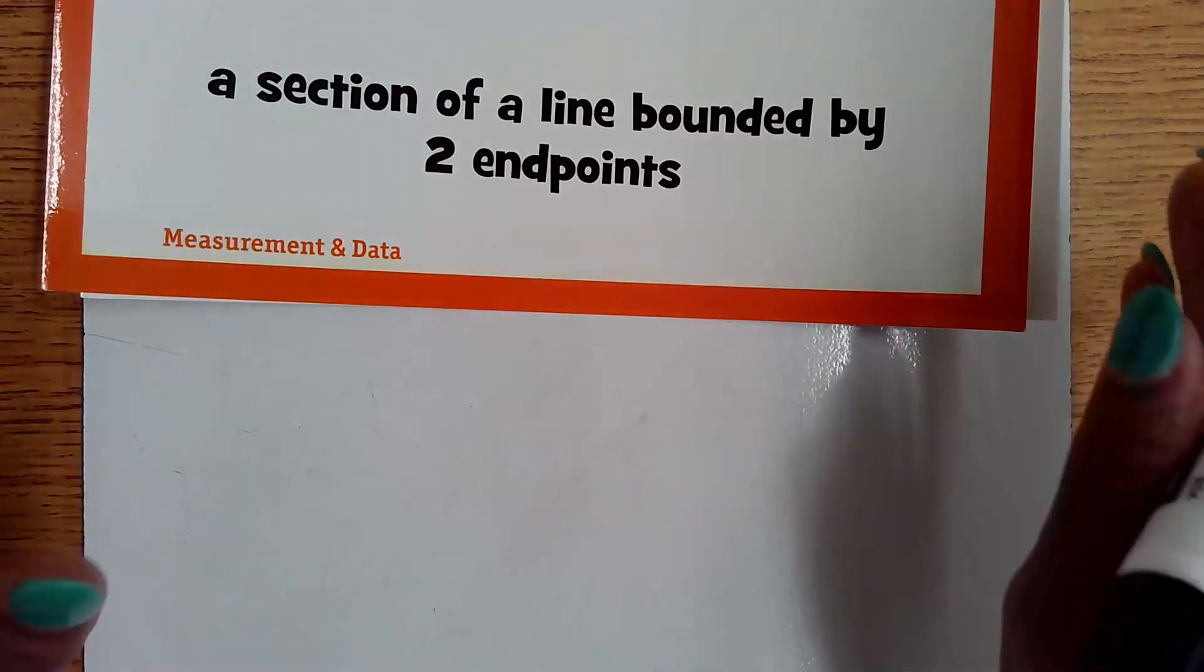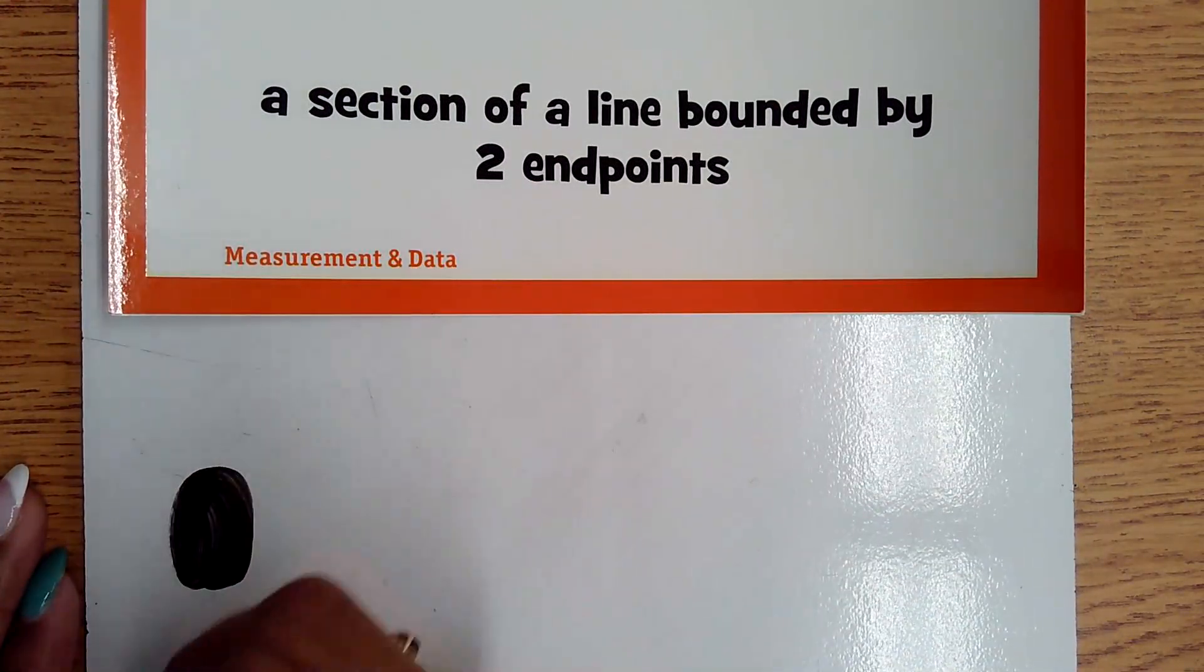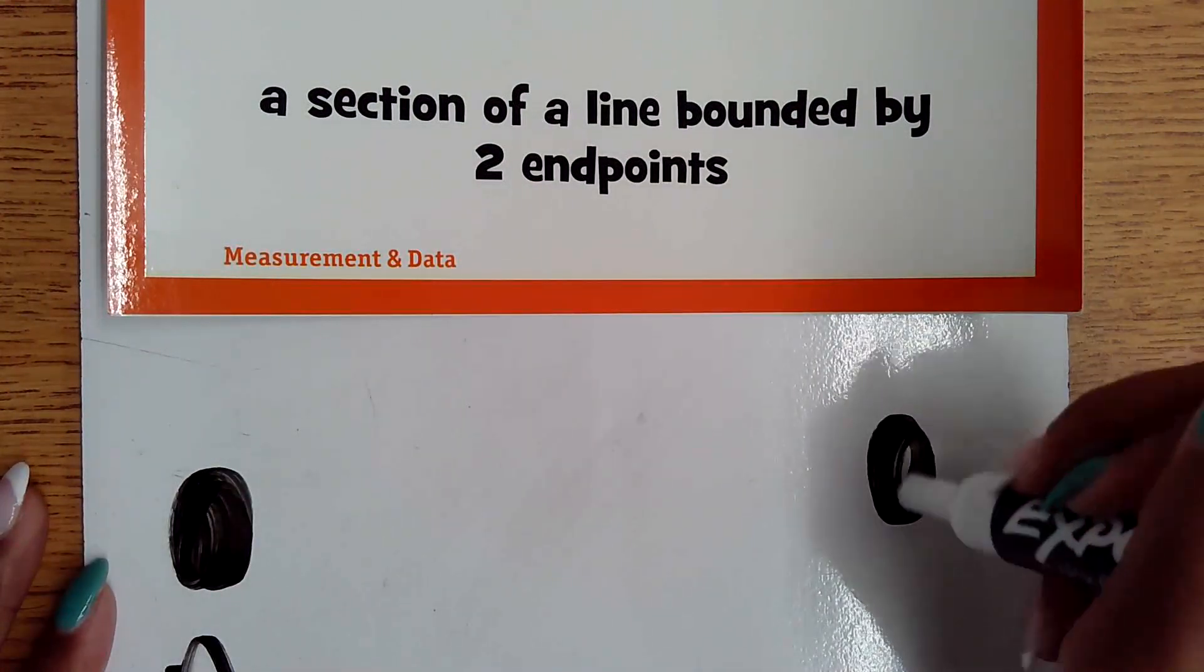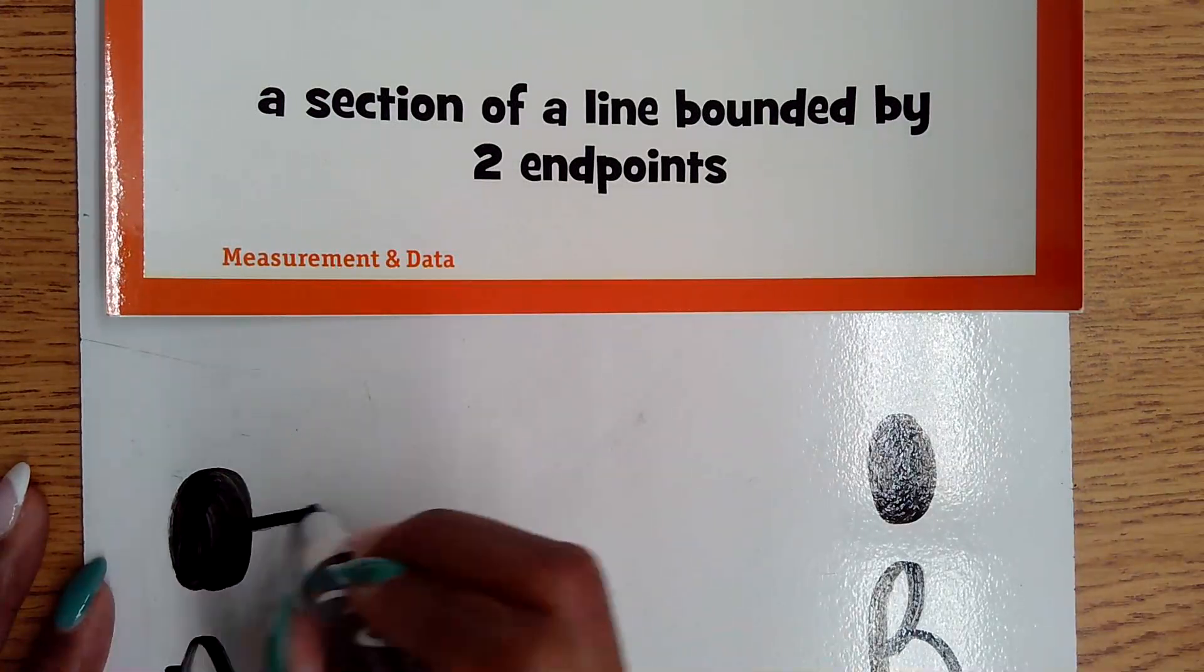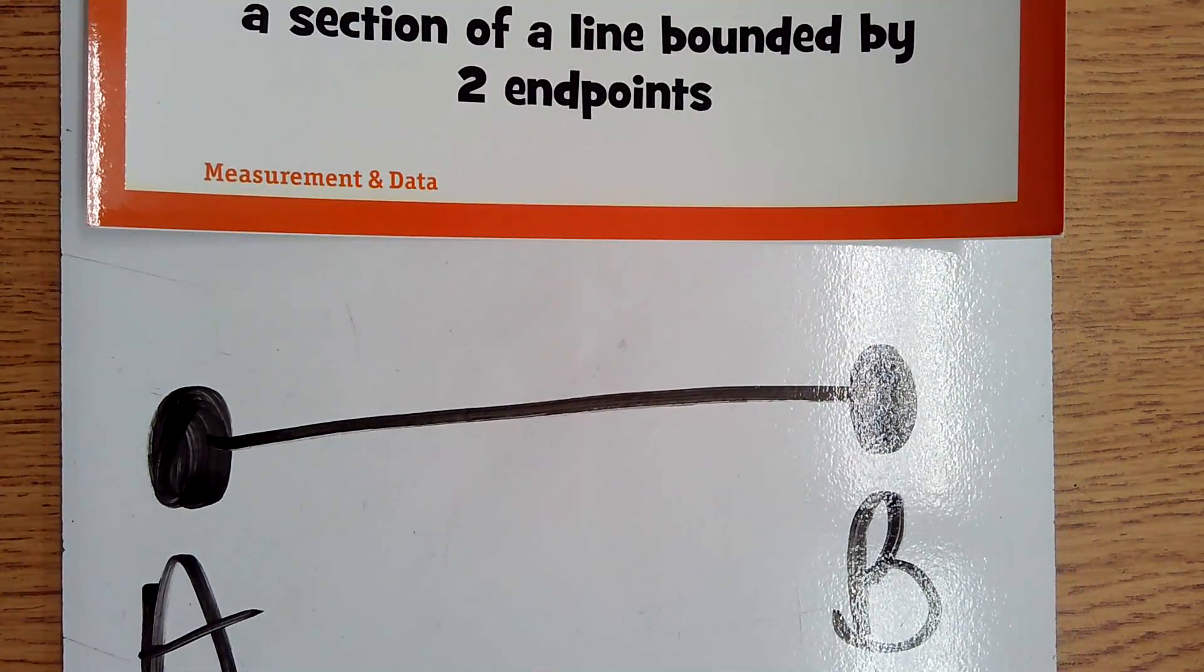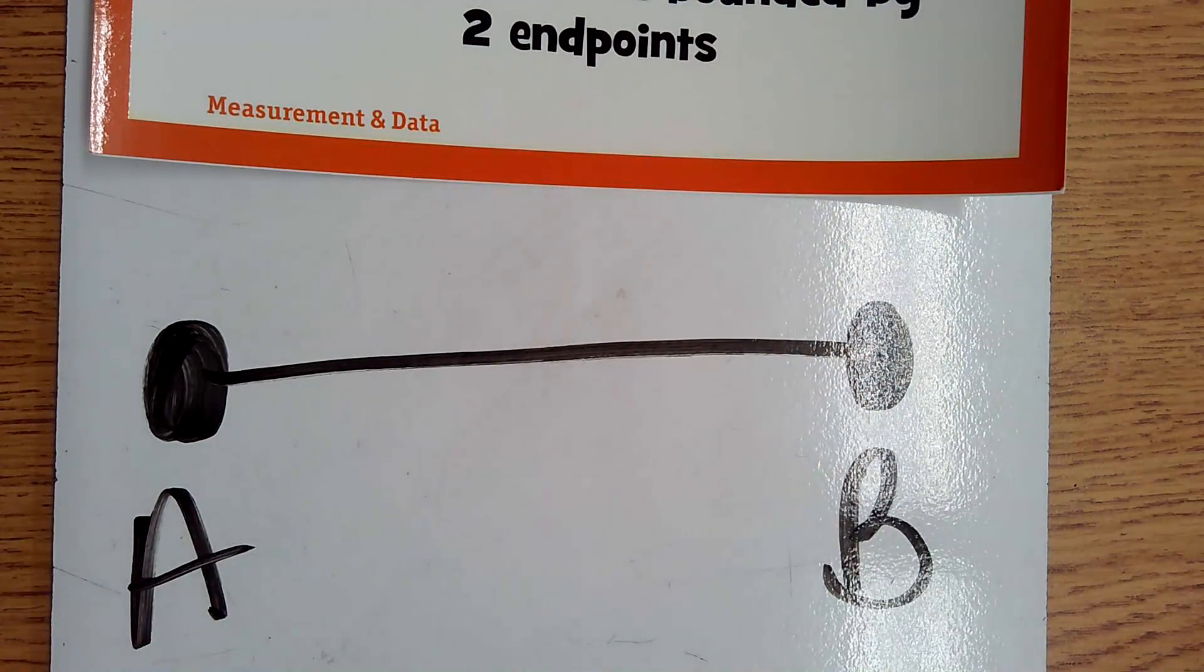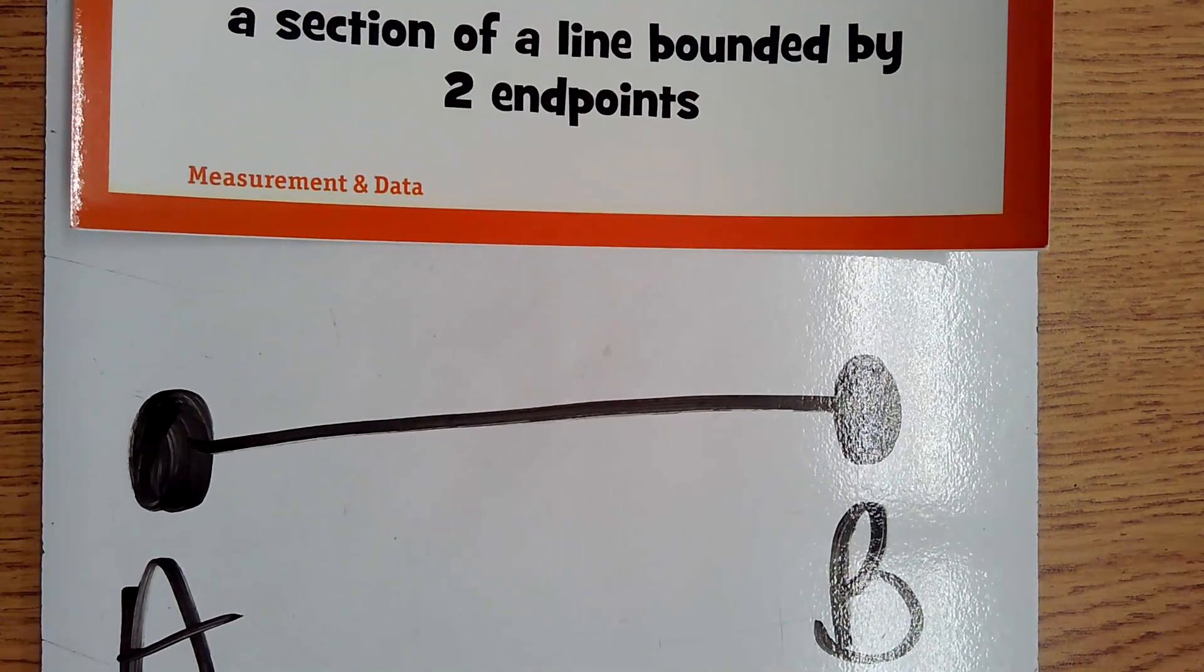We're going to take that word we just worked on, points. We're going to have two points, we'll call this point A, we'll call this point B. And then in the middle you're going to have a line. So my line is bounded by our two endpoints. It does not extend beyond the endpoints, it's just a section.